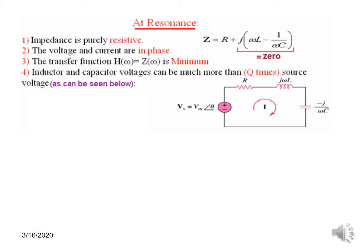A couple of phenomena take place at resonance. Number 1: the impedance becomes purely resistive because the imaginary term becomes zero. Number 2: the voltage and currents are in phase, obviously, because it is now a purely resistive circuit. Number 3: the transfer function H(ω) = Z(ω) is minimum. Number 4: the inductor and capacitor voltages can be much more — Q times, actually — than the source voltage.